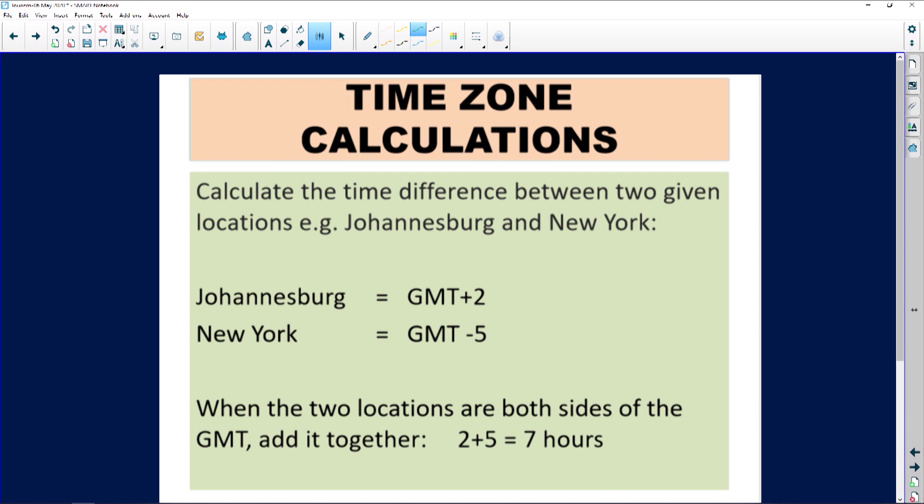The first type of calculation, and you have to do this for any type of time zone calculation, is when you have to calculate the time difference between two given points. It's very important to know you cannot work out a difference if you don't have two points. In this example it says work out the time difference between Johannesburg and New York - that's our two locations.